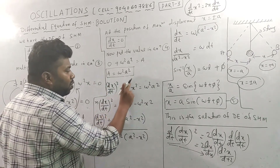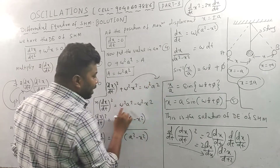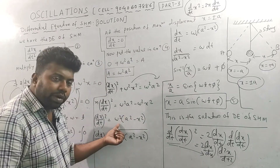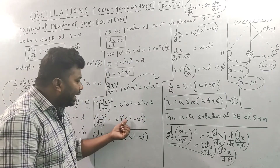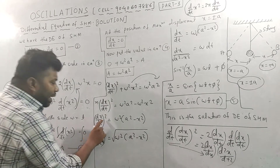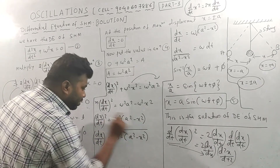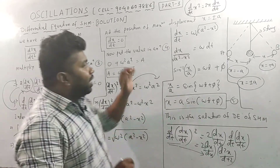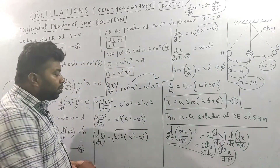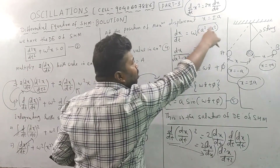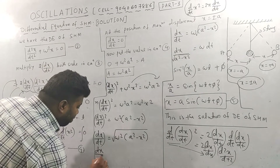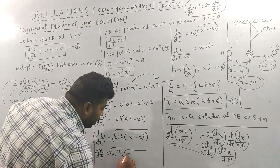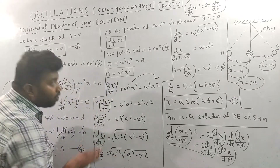So (dx/dt)² = ω²(A² − x²). Taking the square root: dx/dt = ±ω√(A² − x²). Separating variables and integrating: ∫dx/√(A² − x²) = ±ω · t plus some constant φ. Using the standard integral formula, sin⁻¹(x/A) = ±ωt + φ.